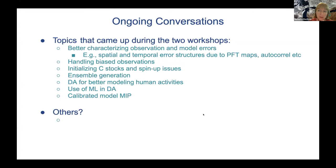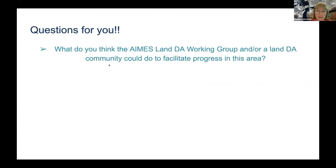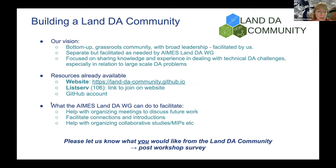Moving on to how we can help: if anyone has ideas for specific model intercomparisons, collaborative studies — we already have one potentially in the works focused on Arctic ecosystems — or other specific technical topics, please let us know. As the AIMES land data assimilation working group, our vision, presented last year, is to build a broad community across all different types of land modeling groups, where sometimes problems will be field-specific and sometimes we can learn from other specialized groups.